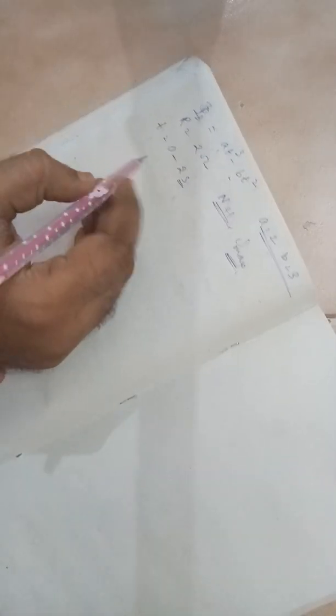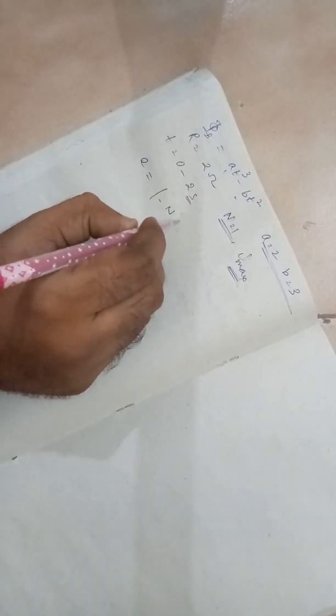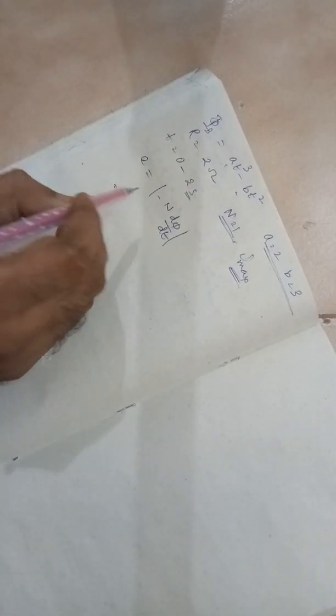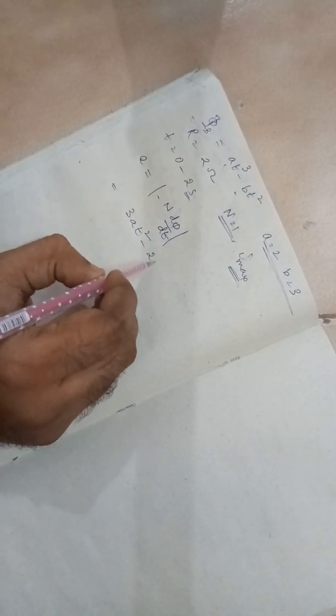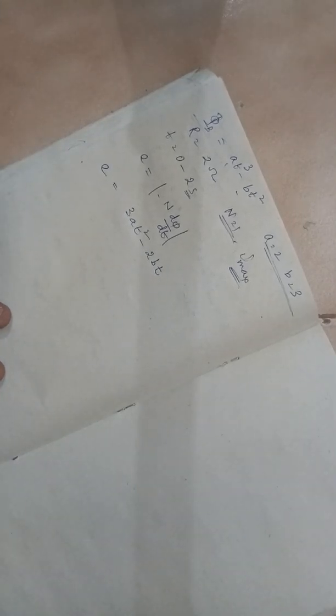You know that the magnitude of E is minus N d phi by dt. So here we can differentiate the function. If you differentiate the function, you get 3 At squared minus 2 Bt. This is what you got: E is equal to 3 At squared minus 2 Bt.